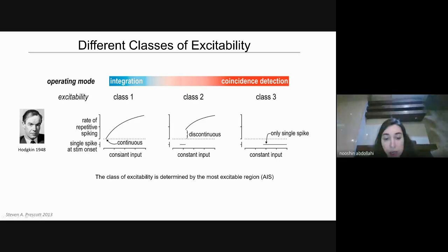Some neurons behave as integrators, and they have class 1 excitability. As we increase the stimulus intensity, they fire with higher frequency. Class 2 excitable neurons can spike repetitively, like class 1, but they can't fire with low frequency. But class 3 excitable neurons cannot spike repetitively. They generate only a single spike, regardless of the stimulus intensity.